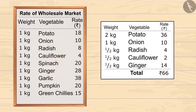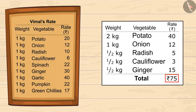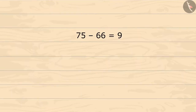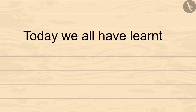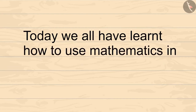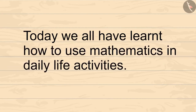According to the wholesale pricing, Sharma auntie's shopping should cost rupees 66. But according to the pricing set by Vimal, she had to give 75 rupees. On subtracting 66 from 75, we get 9. So Vimal has gained 9 rupees on the purchase made by Sharma auntie. Today we have all learned how to use mathematics in daily life activities.